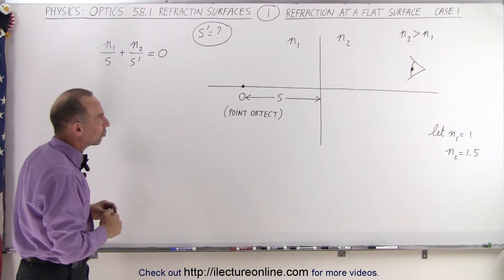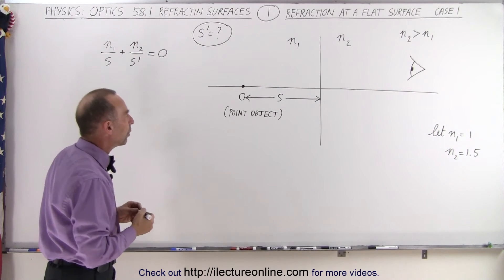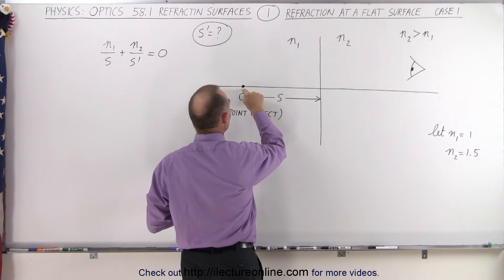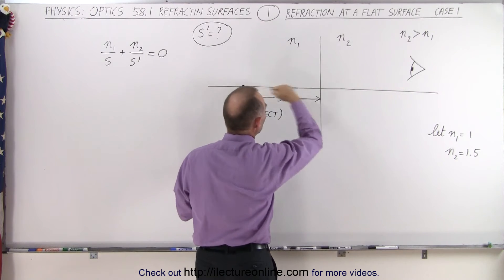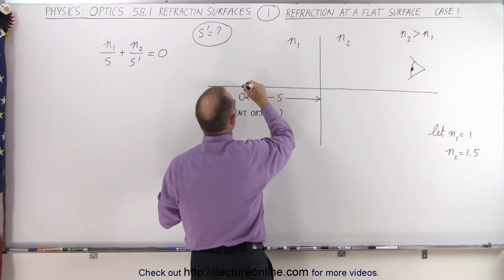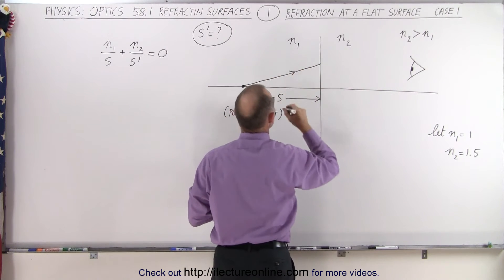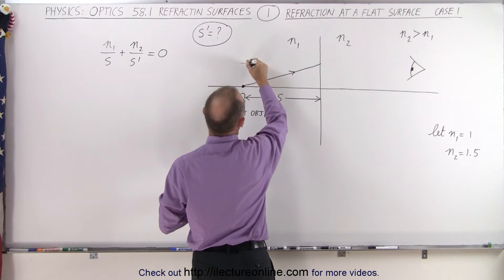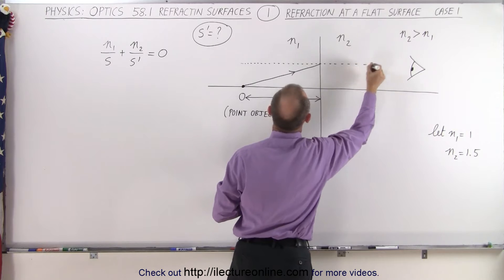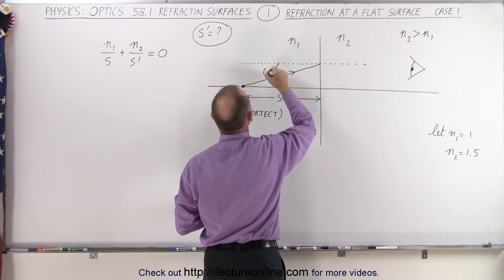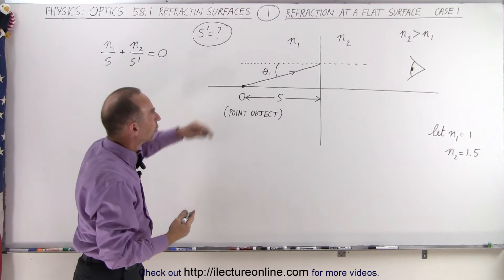So we'll work that out in just a moment, but how do we draw the rays for that? Well, what we're going to do is draw a ray from the object to the boundary right here, but not parallel to the optical axis. We'll do it at an angle. So here we'll draw a first ray like this, and if we then draw an optical axis perpendicular to the surface like this, we can see that this is theta sub 1, the angle relative to the perpendicular to the surface.